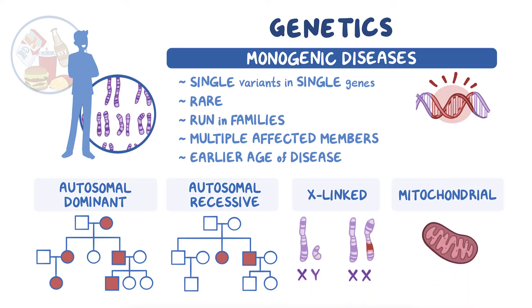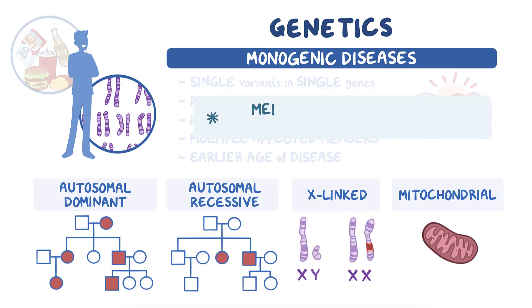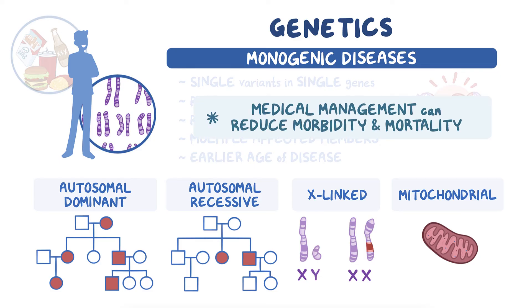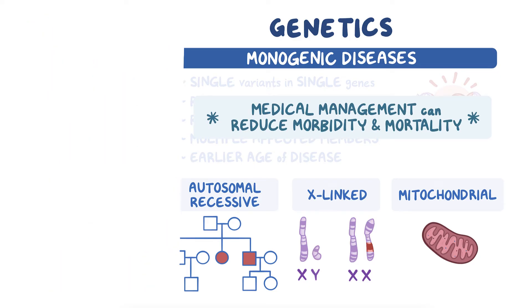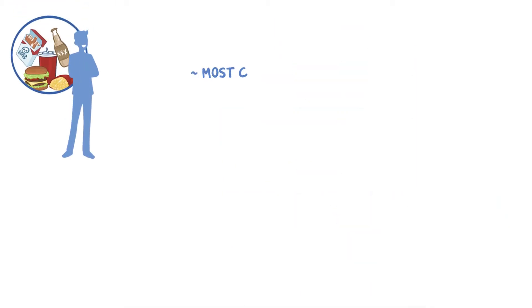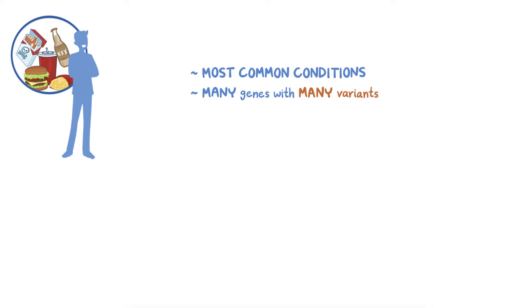Monogenic conditions are important to recognize since medical management guidelines can greatly reduce morbidity and mortality. On the other hand, the causes of most common health conditions are more complex and influenced not only by lifestyle and the environment, but by many different genes with many common variants.